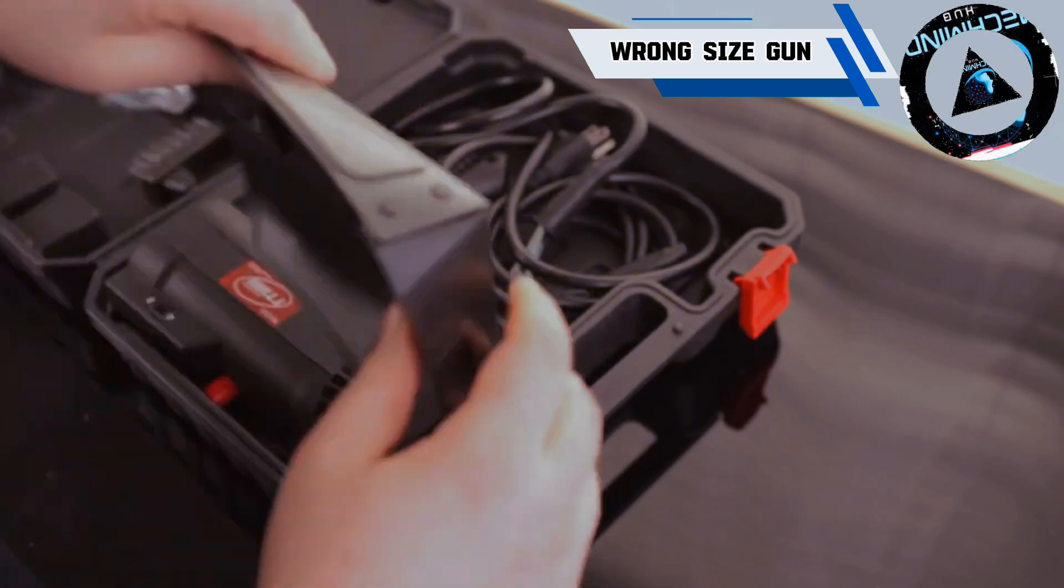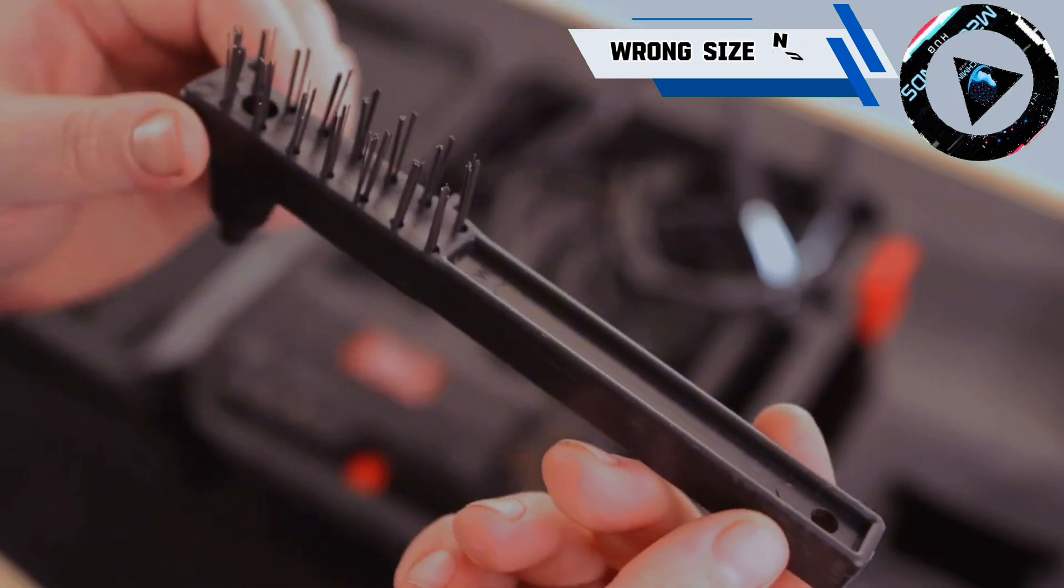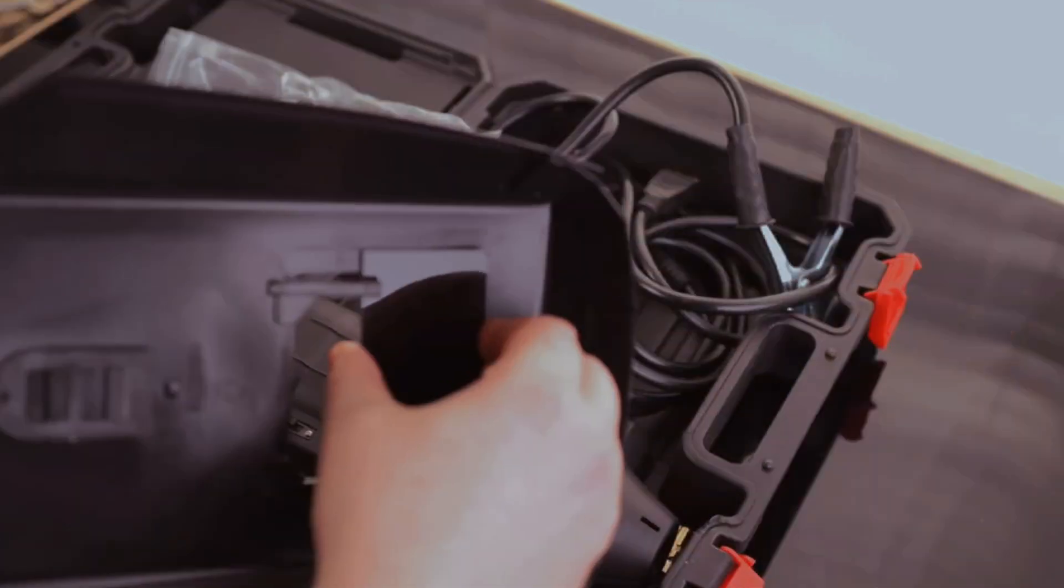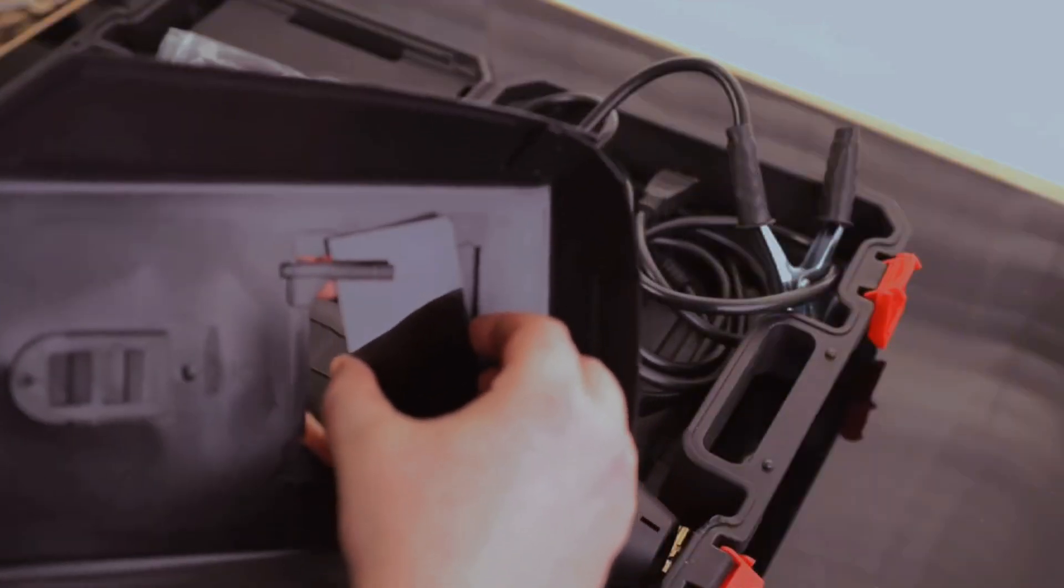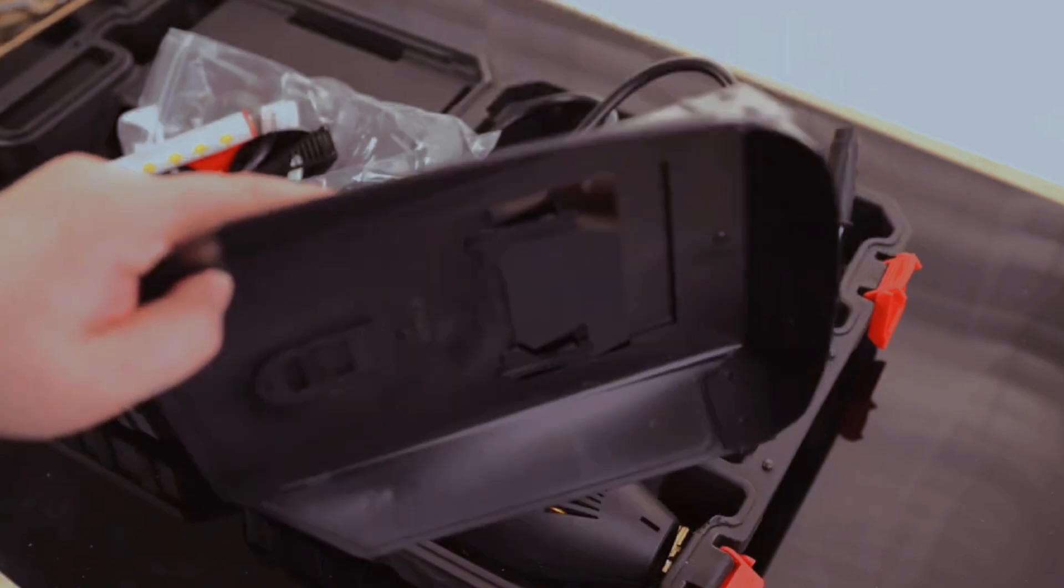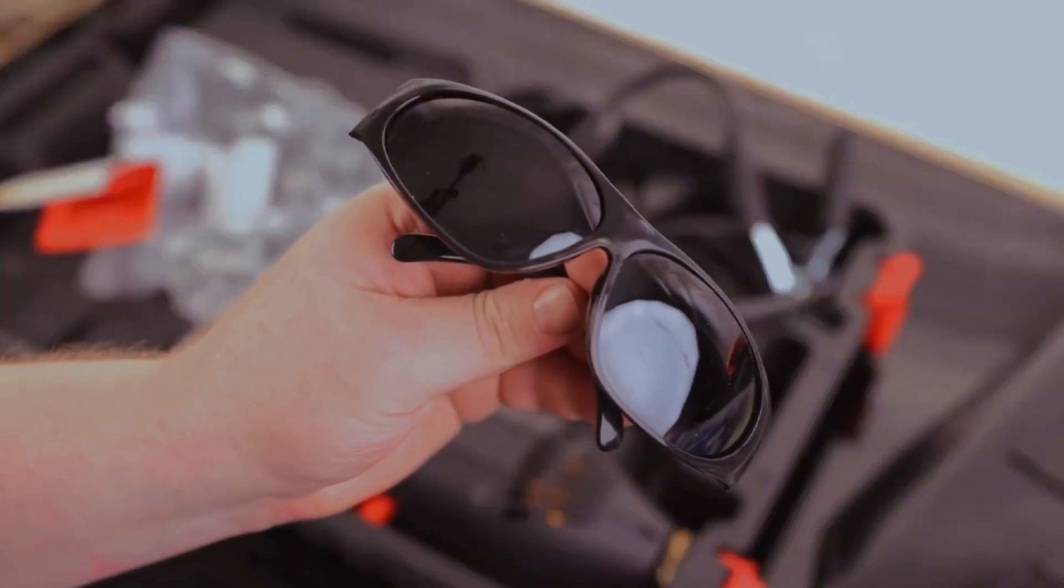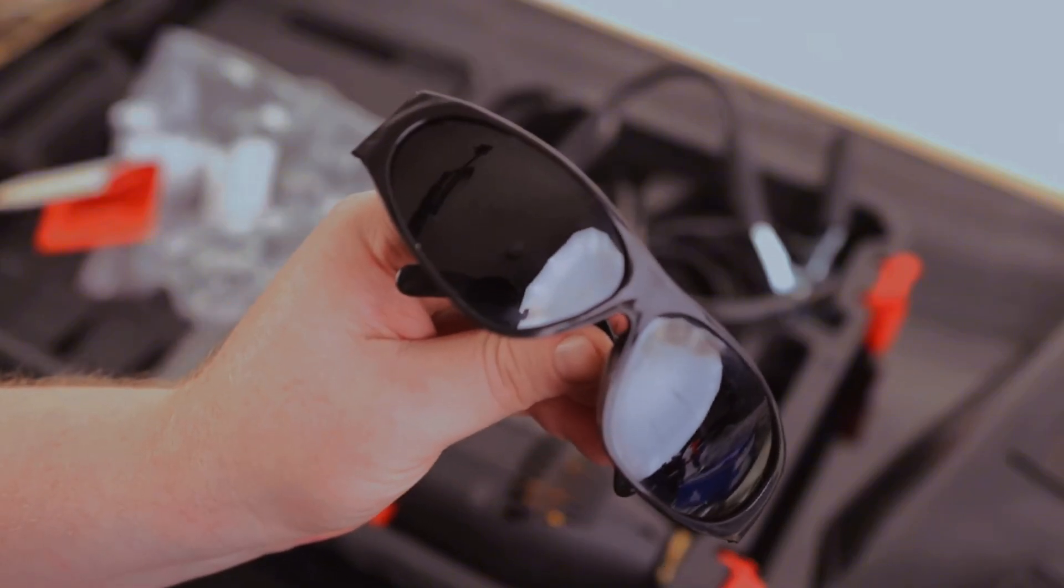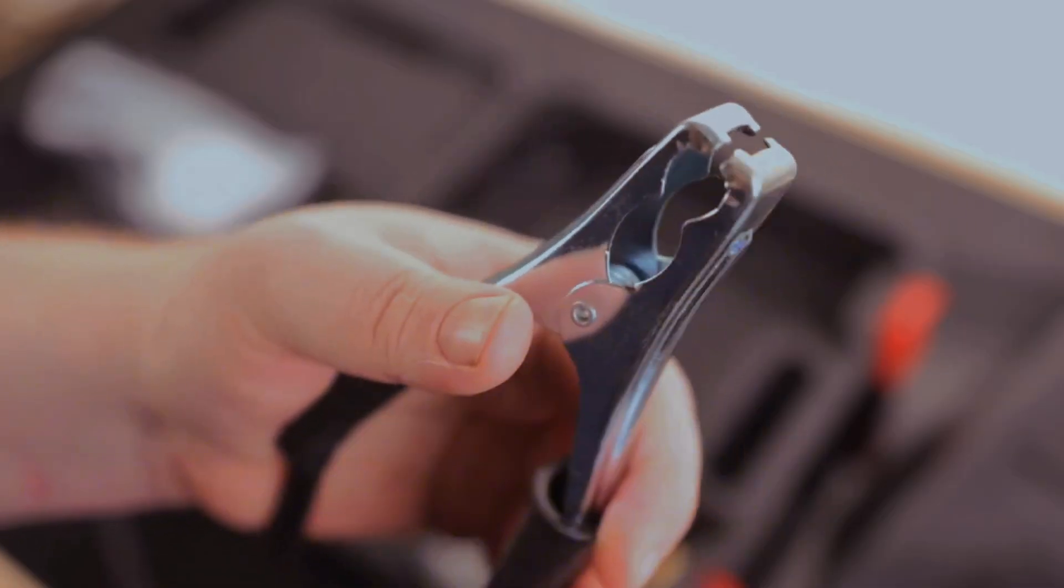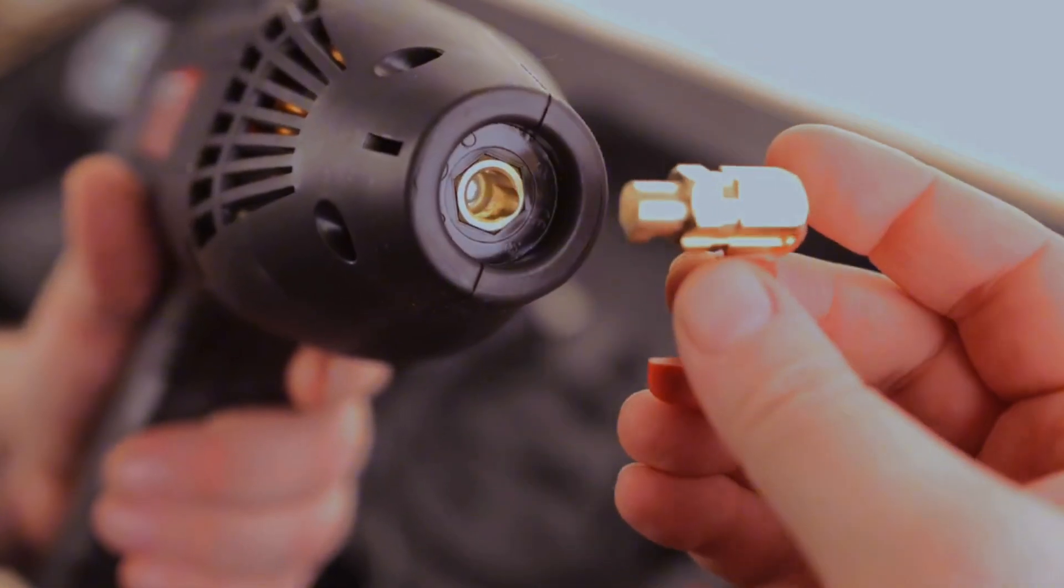Another mistake that can affect your welding quality is using the wrong size gun. This is the tool that holds and feeds the electrode or wire for your welding process. If using a gun that is too big or too small for the job, you might encounter some difficulties, such as overheating, jamming, or poor welds. That's not what you want, right?